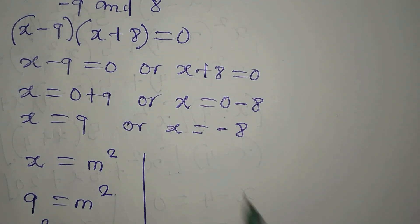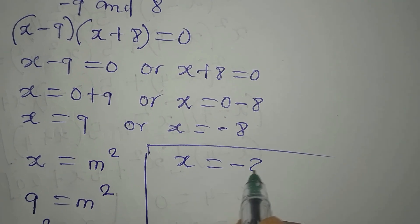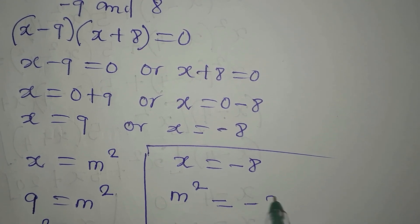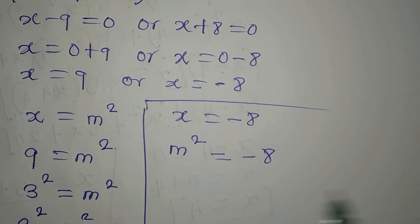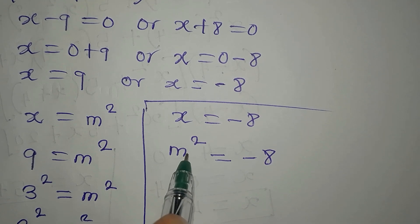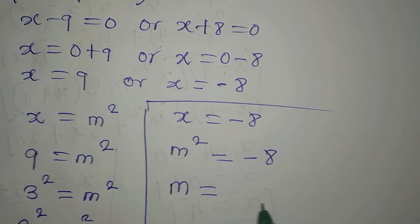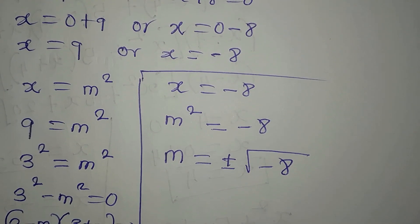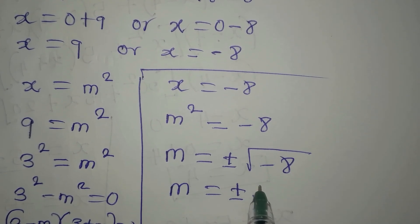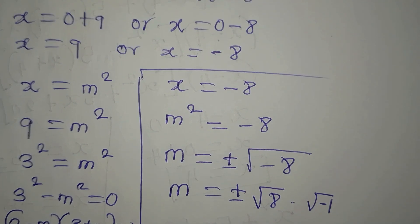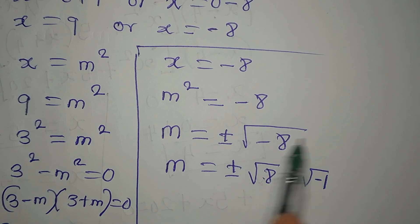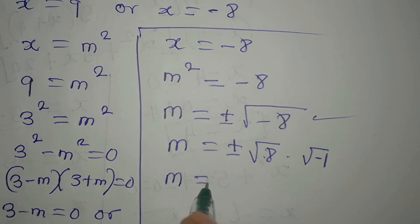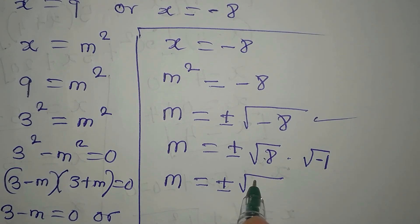Now let's move to the other value of x that we left out. We have x equals negative 8, and since x equals m squared, we have m squared equals negative 8. Taking the square root of both sides, m equals plus or minus the square root of negative 8. We can write this as plus or minus the square root of 8 multiplied by the square root of negative 1.